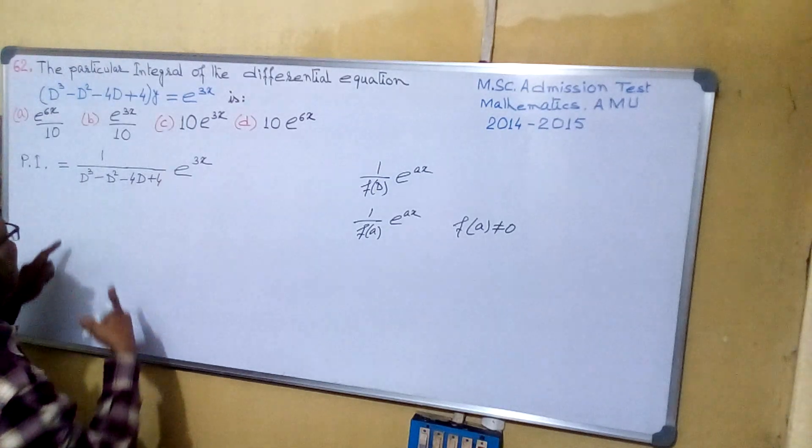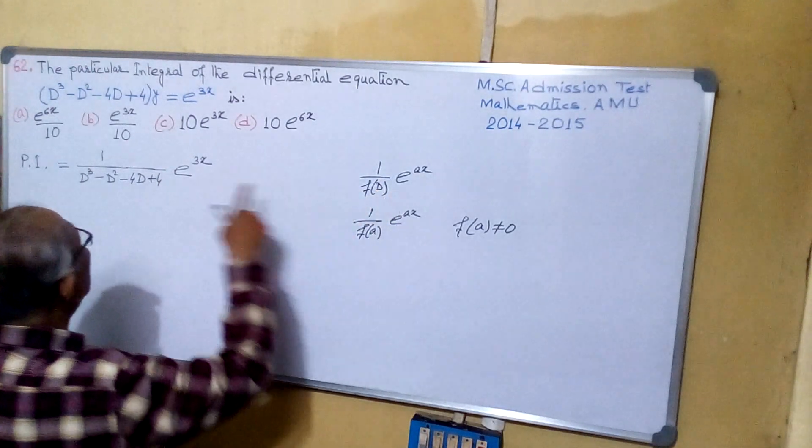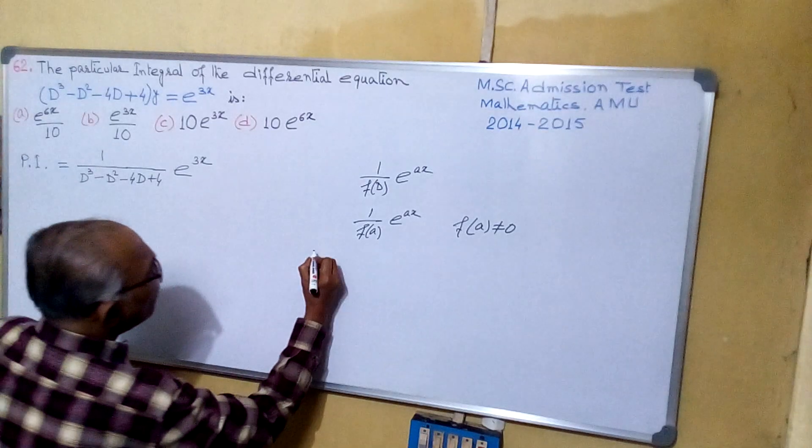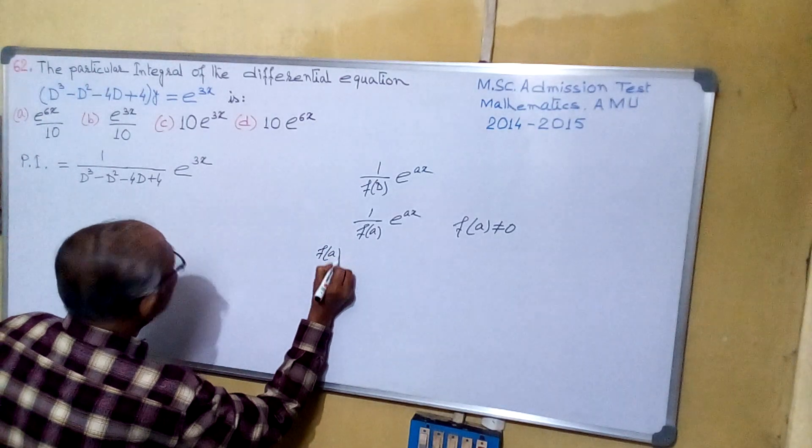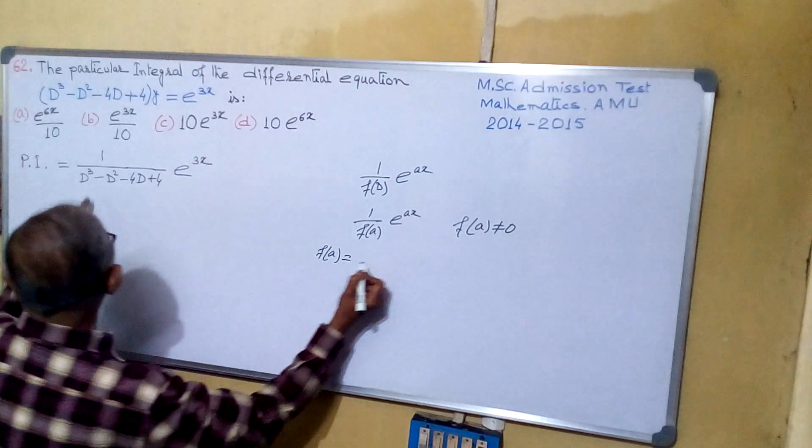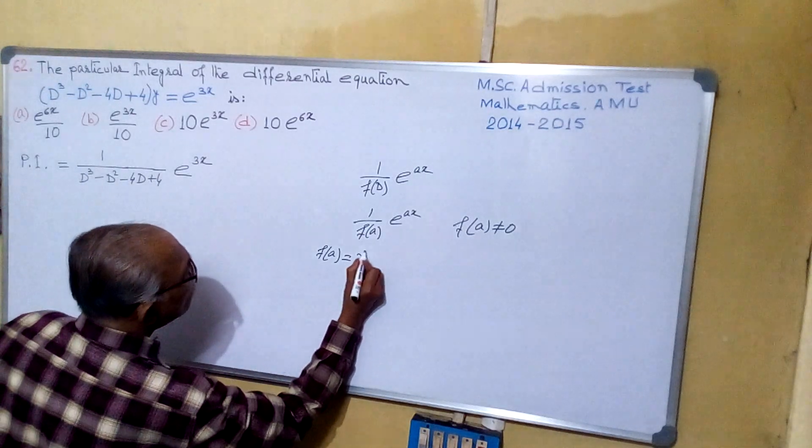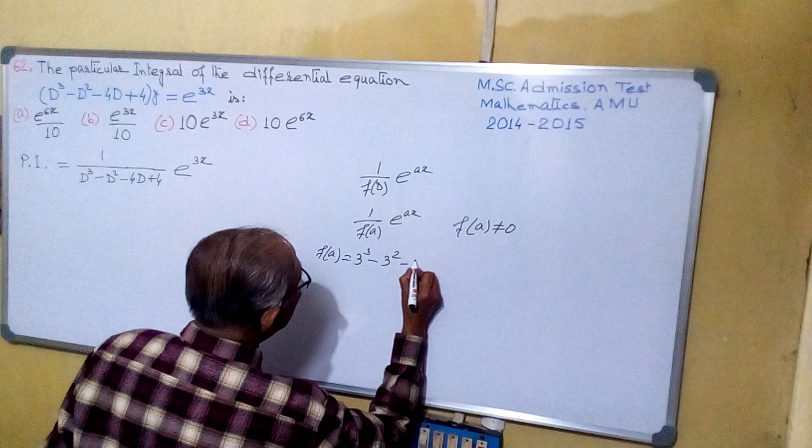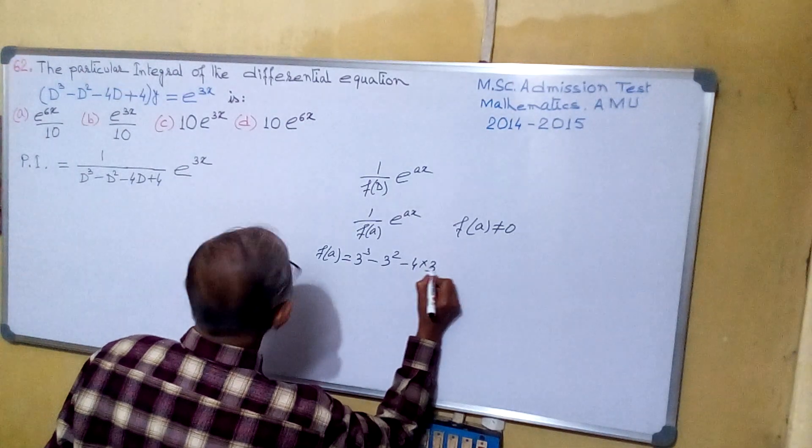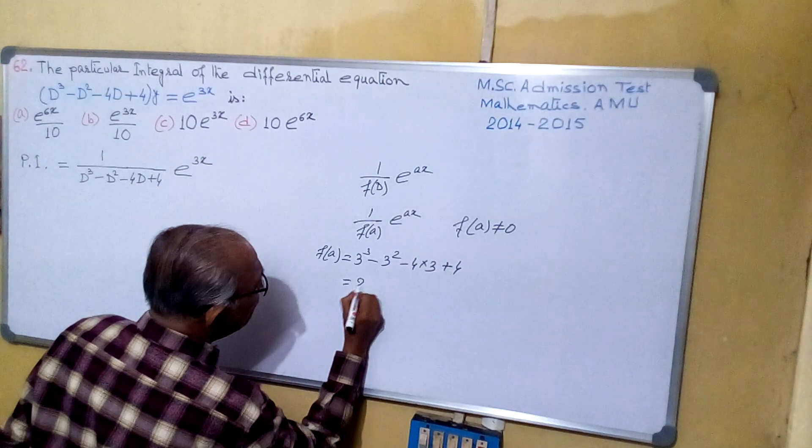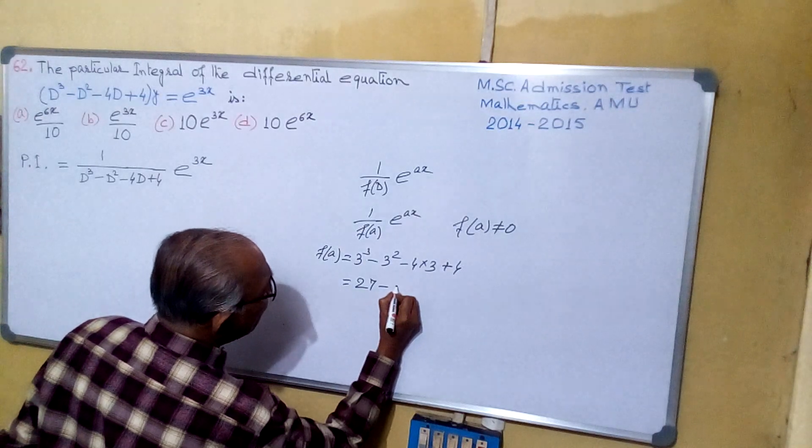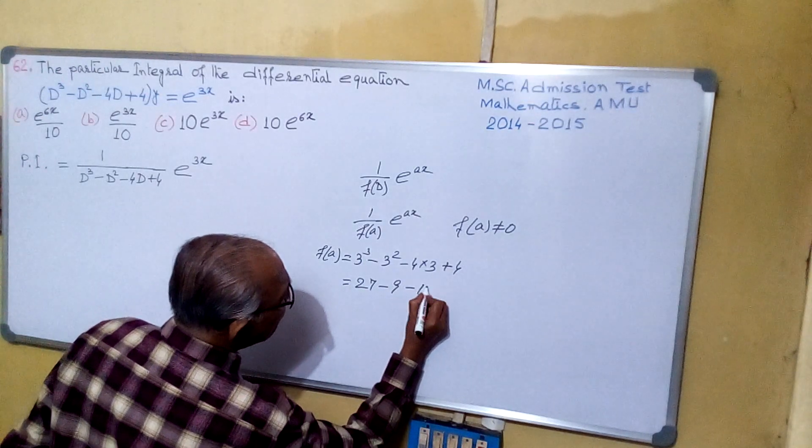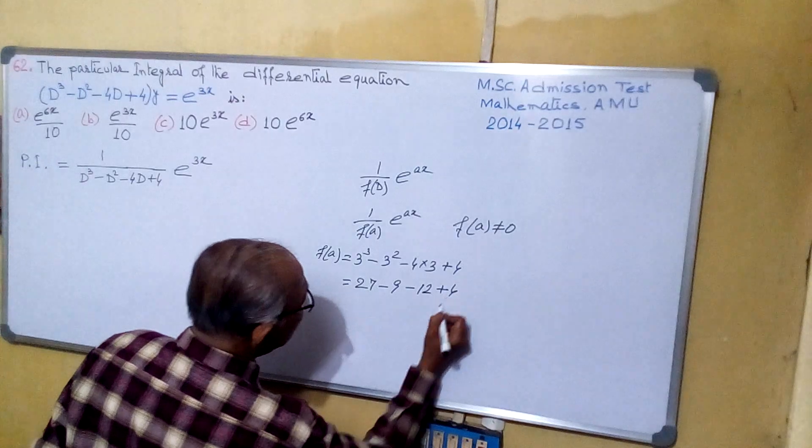What is f(a)? f(a) - that means a is here 3, so f(a) equals to 3 cube. 3 cube minus 3 square minus 4 into 3 plus 4, that is 27 minus 9 minus 12 plus 4.